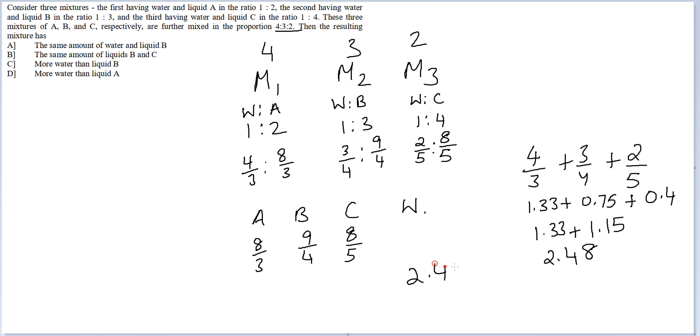Water is 2.48 liters, C is 1.6, B is 2.25, and A is 2.66. The precise volumes for all four quantities have been assorted.